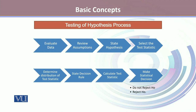Then we state the decision rule. Once we have made the decision rule, we calculate the test statistic and make use of the decision rule along with our results to make a conclusion. Our statistical decision could be 'do not reject H0' or 'reject H0.' Note that we don't say we accept H0 — rather, we say we do not reject H0.